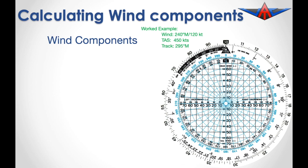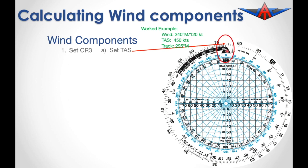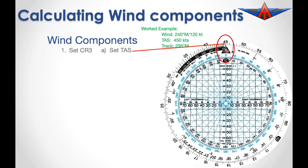The first thing to do is to set up the navigation computer, whether that's the Jeppesen CR3 or the APR CR6 — it doesn't matter, because the process is exactly the same. The first step is to set the true airspeed up the top here, so we need to rotate the outer wheel until 450 is directly above the true airspeed marker.